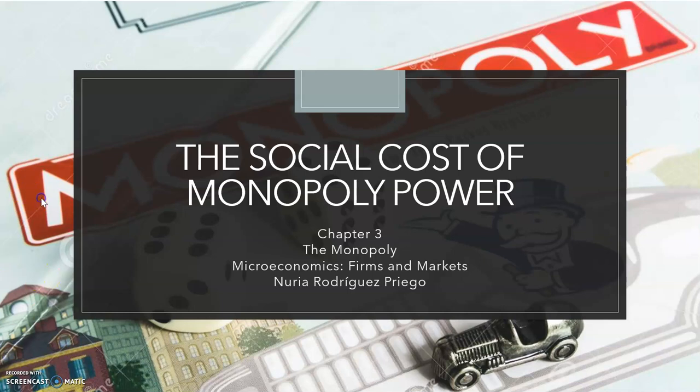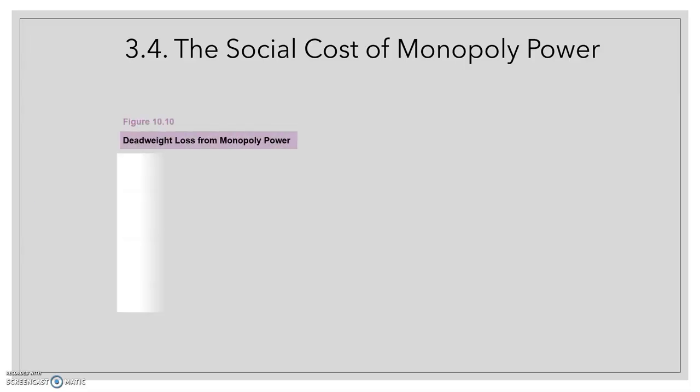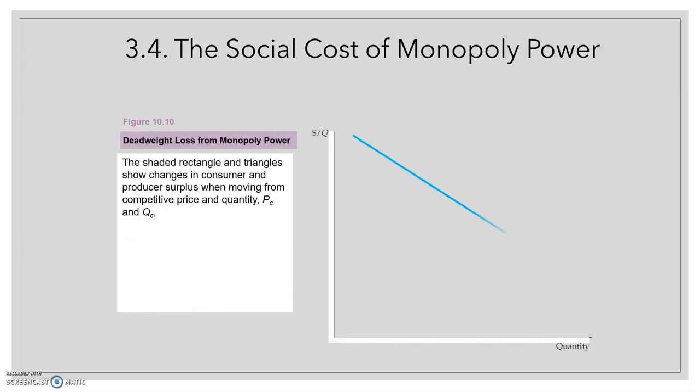We know that in a competitive market, price equals the marginal cost, while monopoly power implies that price exceeds the marginal cost. Because monopoly power results in higher prices and lower quantities produced, we would expect it to make consumers worse off and the firm better off.